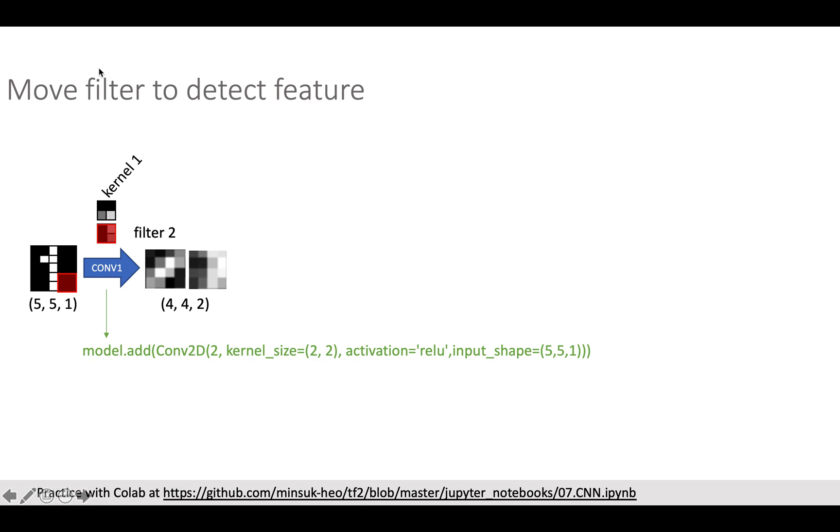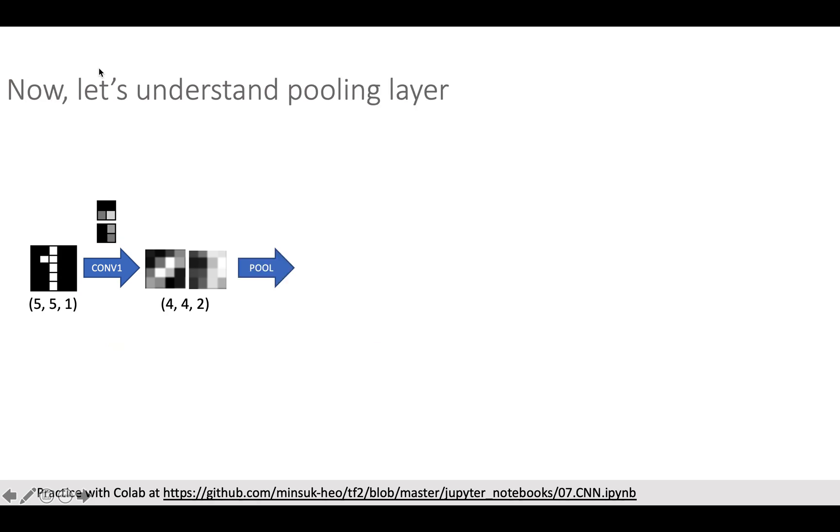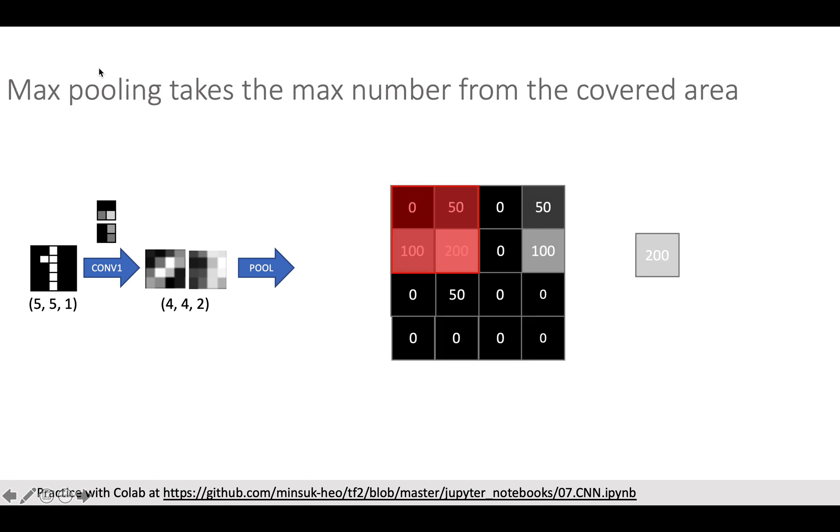The shape is four by four since the kernel moved right side four times and moved down side four times. I put TensorFlow 2 code snippet in this slide. The line should be easy to understand if you are following me now. The Conv2D means we are handling 2D matrix. You can see the kernel size is two by two matrix. We use ReLU as activation function and the input shape is grayscale image shape here. Next is the pooling layer. I will use max pooling here. Max pooling takes the max number in the boundary.